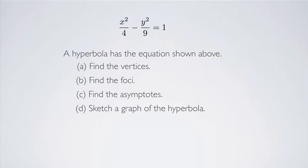A hyperbola has the equation x squared over 4 minus y squared over 9 equals 1. We're going to find the vertices, find the foci, find the asymptotes, and sketch a graph of the hyperbola.